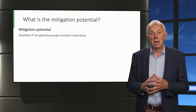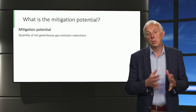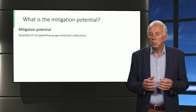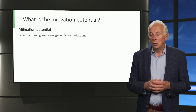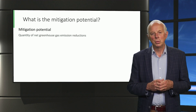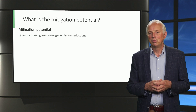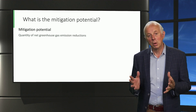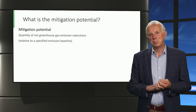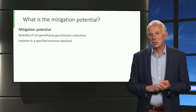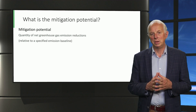A mitigation option can be anything like home insulation, application of wind energy, or eating less meat. We talk about net greenhouse gas emission reduction because not only are there options that reduce CO2 emissions, but there are also options that extract CO2 from the atmosphere and some that do both. It is important to always specify the baseline against which emission reductions are counted. We will get back to that later in this video.